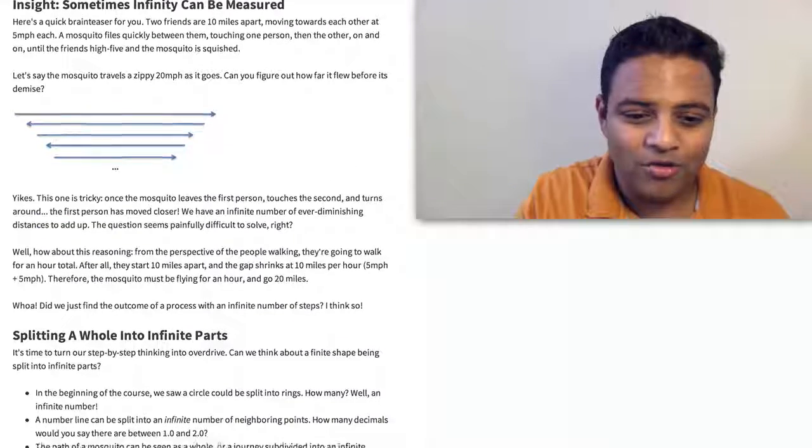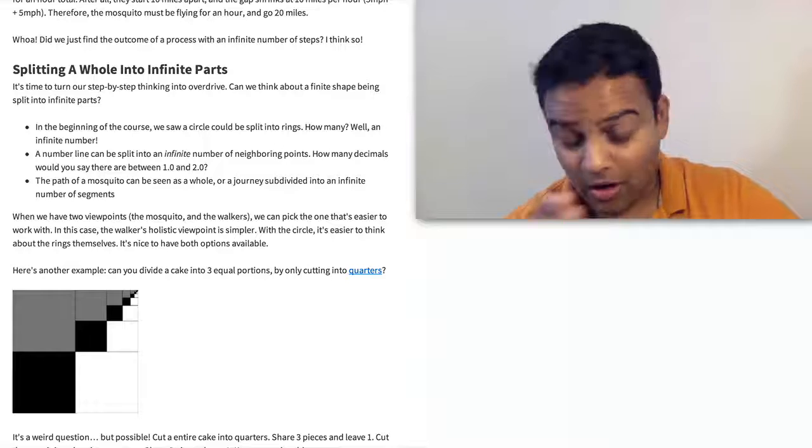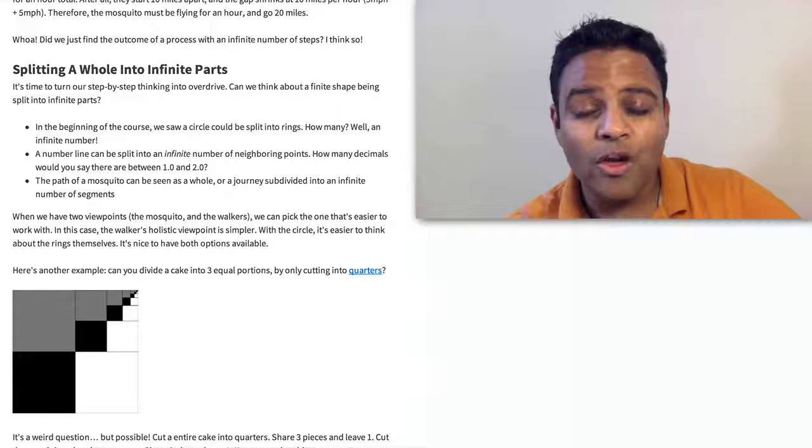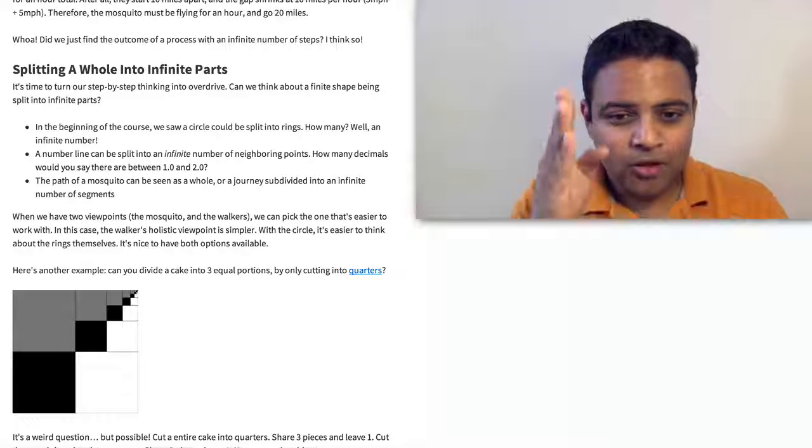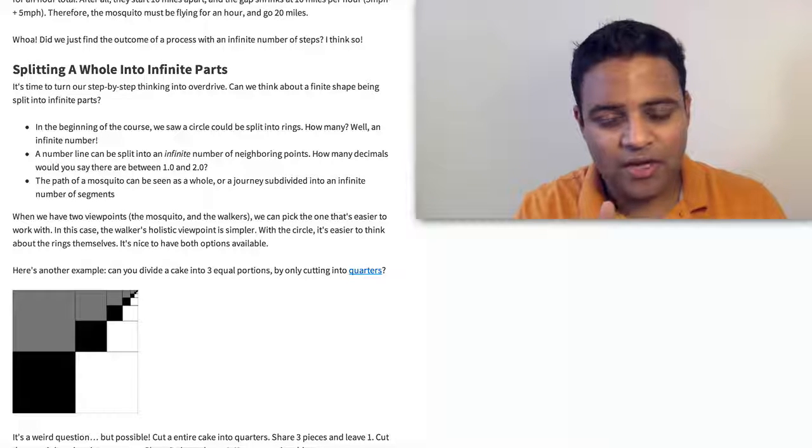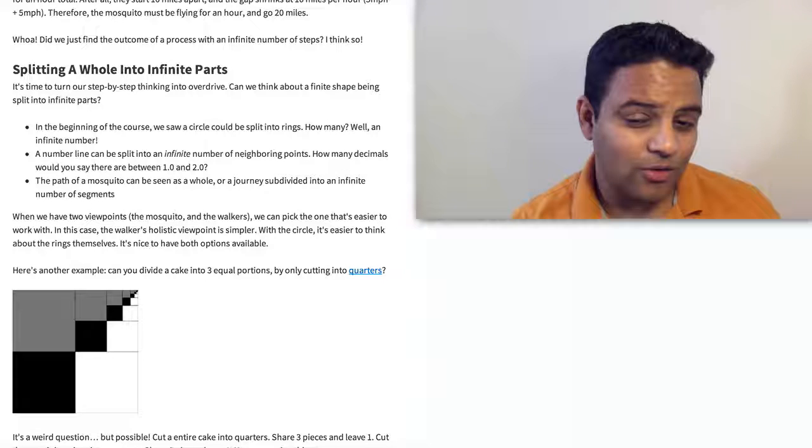So here's one more example. Imagine trying to cut a cake into quarters, into thirds, but you could only cut into quarters. So you have a square cake. You need to cut it into four pieces each time, but you want to split it among three people. What can you do?